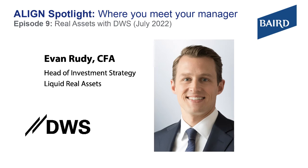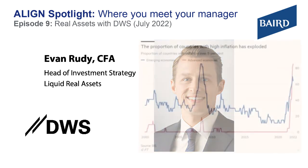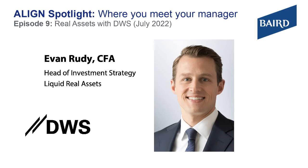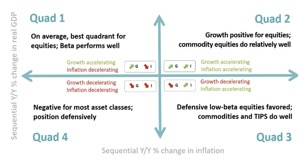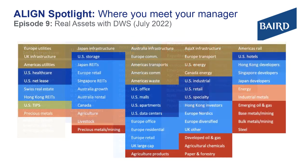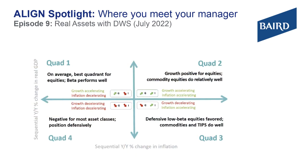There are pretty unique performance characteristics depending on different environments. The way we like to look at it is the acceleration and deceleration in growth and inflation. We've had unique movements in those variables over the last couple of years with COVID shutdowns, reopening, and current conditions. We look at this across four quadrant environments: growth accelerating on the top half, growth decelerating on the bottom half, inflation accelerating on the right-hand side, and inflation decelerating on the left-hand side. Over time empirically, whether by asset class or more particularly by subsector, you get unique performance characteristics in those different environments.